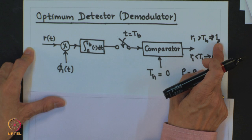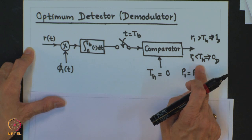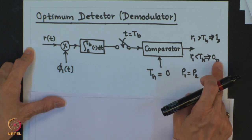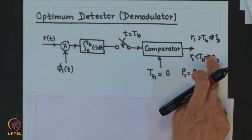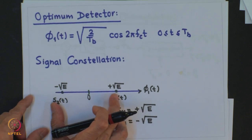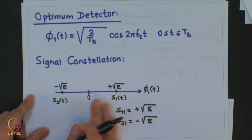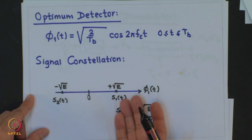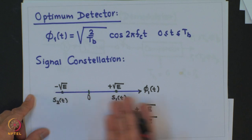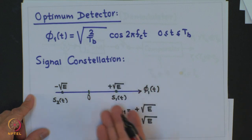If R_1 is less than the threshold of 0, we decide that 0 has been transmitted. Given the signal constellation, we can immediately write down the probability of error. In this case the probability of error is symmetric: whether we transmit S2(T) or S1(T), the probability of error is the same — the conditional probabilities of error are equal.